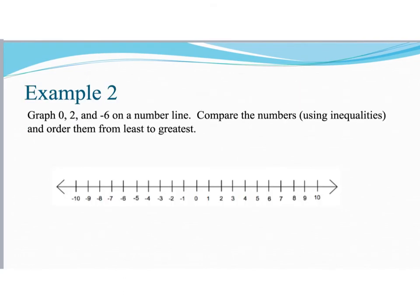Now we can use these symbols here along with the number line to help us compare numbers. So for example two, it says graph zero, two, and negative six on a number line. Once we do that, we're going to compare the numbers, and it does tell us that we're going to be using inequalities and order them from least to greatest. So let's start out graphing these three numbers right here. So I have zero. I'm going to go and put a dot right on zero. Then it says the number two. Two is a positive number, so I'm going to place my dot on two. And then I have a negative six. Negative six is going to be to the left of zero because it's negative. So I have my point here. Now what this does, and I'm going to write my numbers up here, so this is negative six, zero, and two.